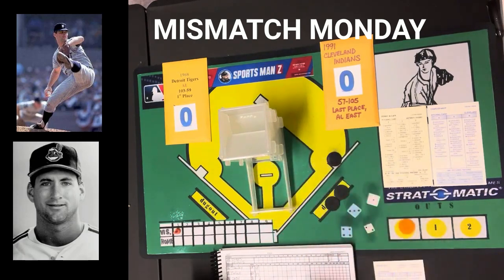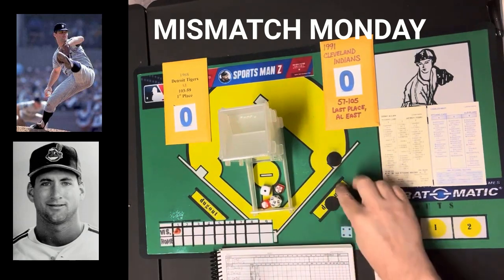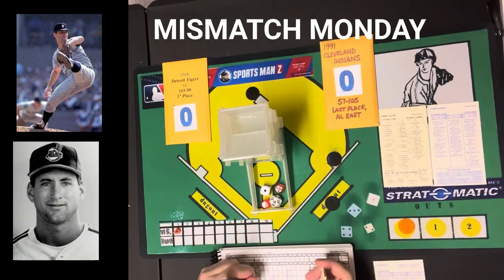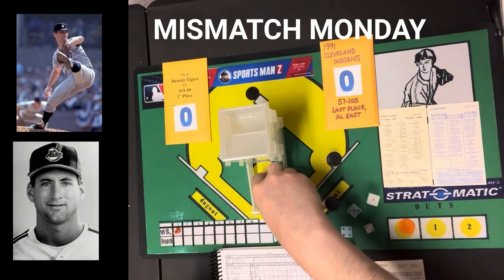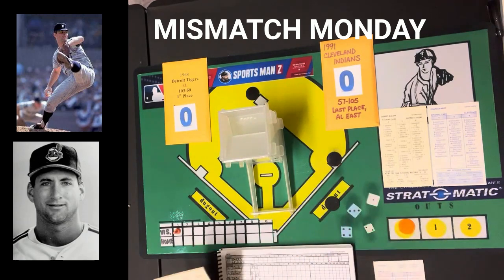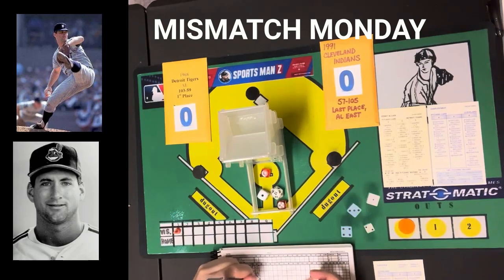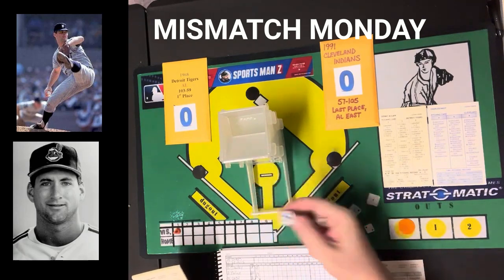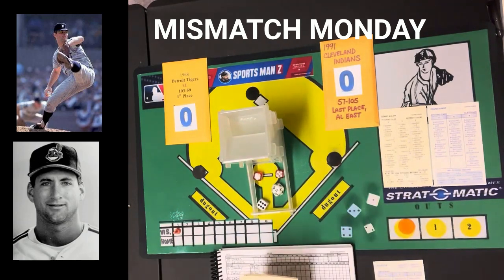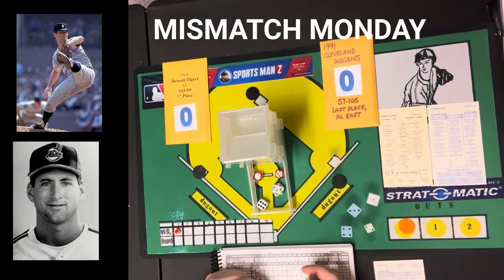Bill Freehan gets a 1-6 — a walk to load the bases. After getting the first two outs, Nagy is in trouble with bases loaded. Dick McAuliffe gets a 6-10, which is a double, knocking in two runs. Nagy has completely fallen apart. Two runs score.